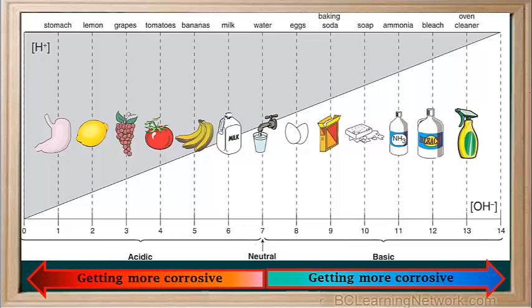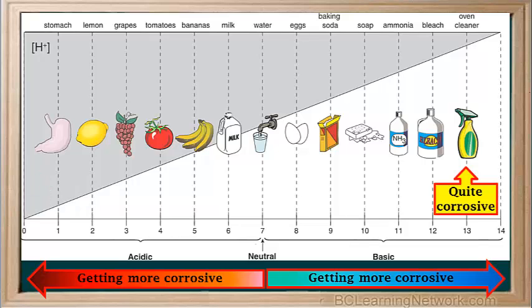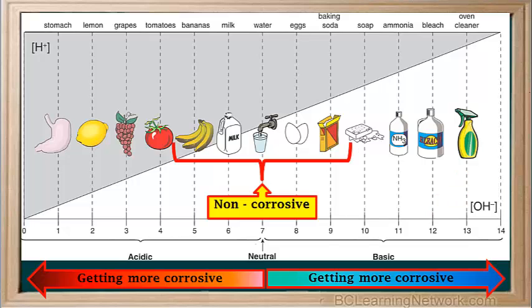It's good to know that the further away a substance is from a pH of 7, the more corrosive it is. For example, stomach acid, which is hydrochloric acid or HCl, has a pH of around 1 and is quite a corrosive acid. While oven cleaner, which is sodium hydroxide or NaOH, has a pH of around 13 and is quite a corrosive base. Substances with a pH close to 7 are non-corrosive.